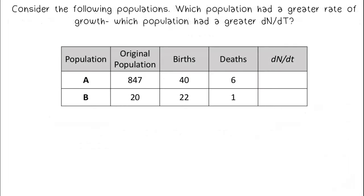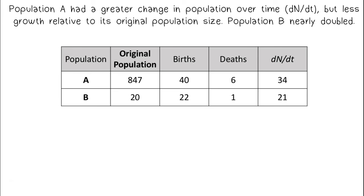Consider the following populations. Which population had a greater rate of growth? Which population had a greater dN over dt? Well, population A had a greater change in population over time, but less growth relative to its original population size. Population B nearly doubled.